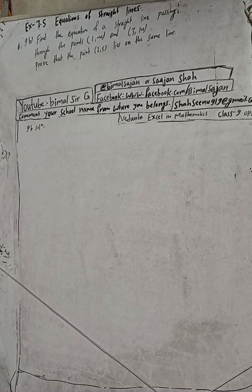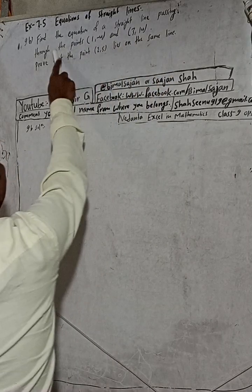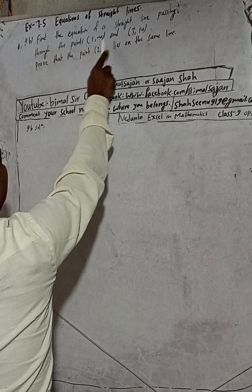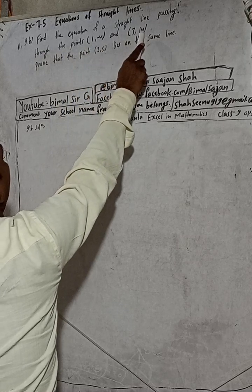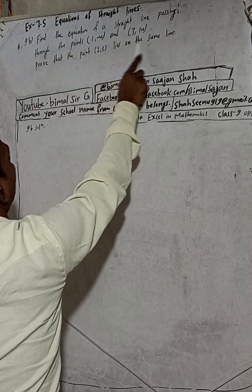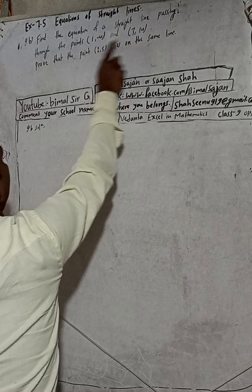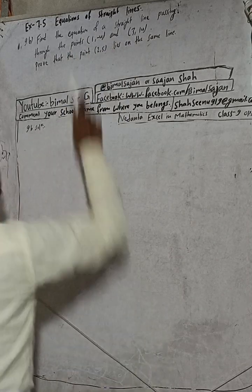Hi class 9 and 10 students, welcome back to Bimal Sarji's YouTube channel. This is question number 9b of exercise 7.5, equations of straight lines, class 9 optional mathematics. The question is: find the equation of a straight line passing through the points (1, -4) and (3, 14), and prove that the point (2, 5) lies on the same line.